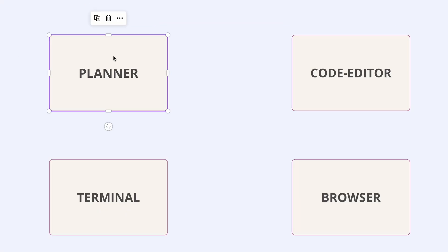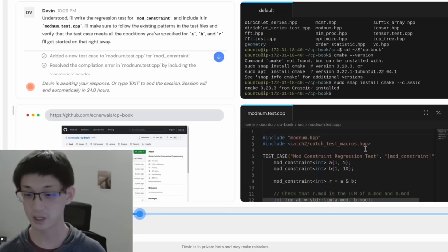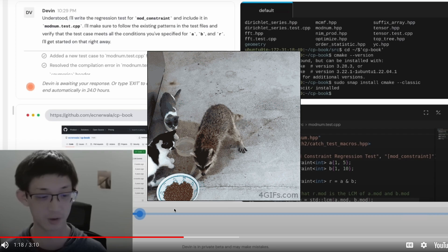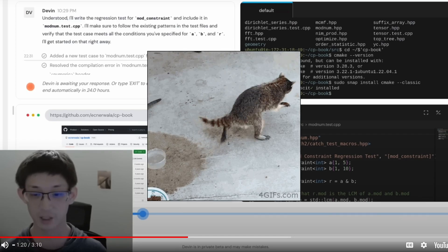Devon also has access to four different tools. The main tool that understands a task and breaks it down is called Planner. Then we have a terminal, a code editor, and a browser with internet access. With all these four tools, it looks like Devon might steal your job.